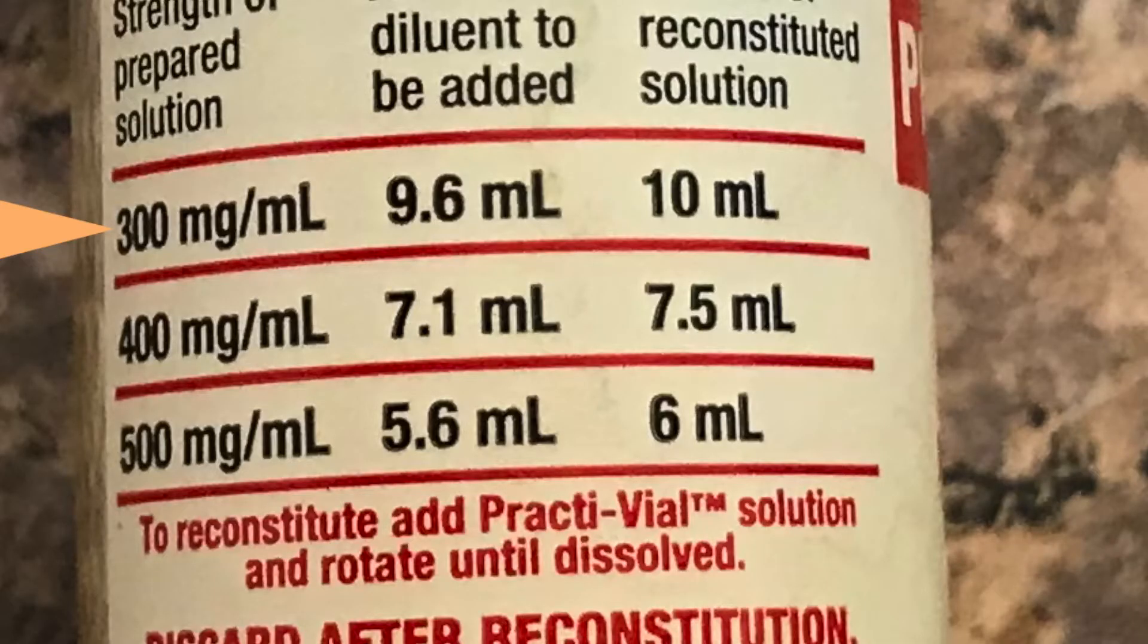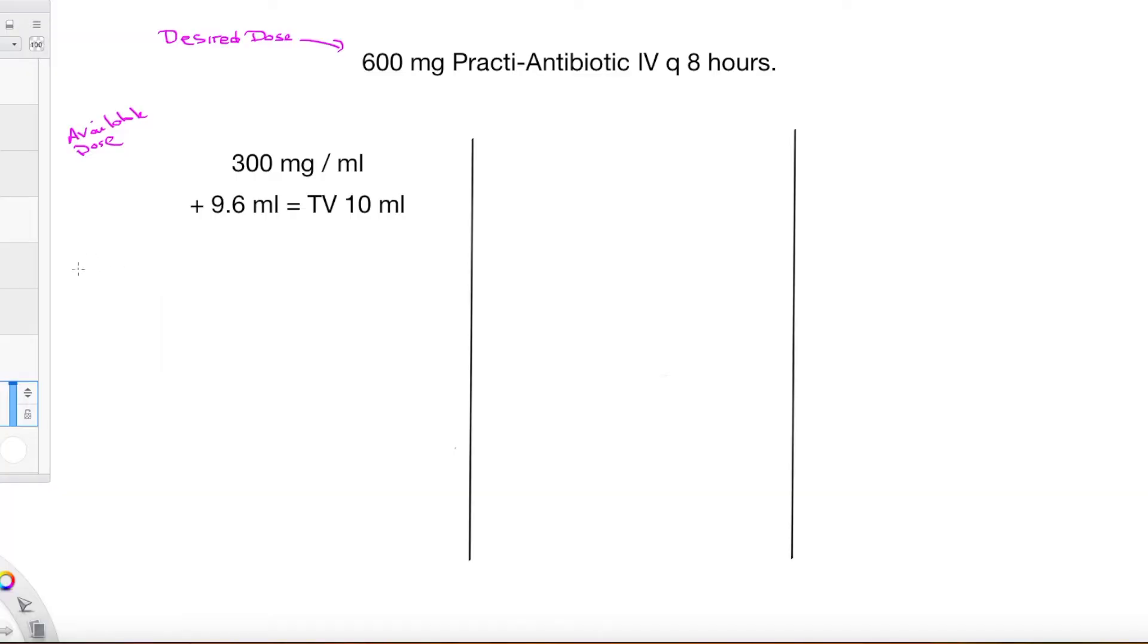Let's take a look at our vial again. If I want a concentration of 300 milligrams per ml I need to add 9.6 mls of diluent and I will have a total volume of 10 mls. At a concentration of 300 milligrams per ml I still don't have my desired dose so I need to figure out how many mls I would use if I were to reconstitute with 9.6 mls. So using dimensional analysis I will solve for this equation and I can see that I would need 2 mls of the medication at this concentration.